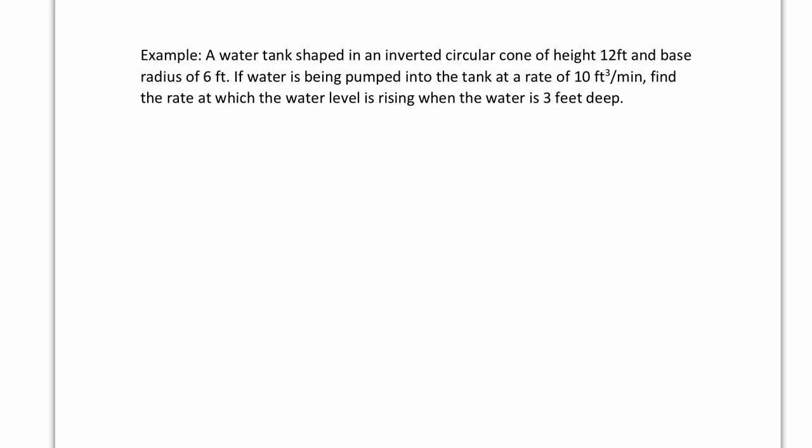Let's do another one. A water tank shaped as an inverted circular cone has height 12 feet and base radius 6 feet. Water is being pumped into the tank at 10 feet³ per minute. Find the rate at which the water level is rising when the water is 3 feet deep. There's a lot going on here. We have an inverted circular cone — inverted means upside down, like an ice cream cone. Water is being pumped in, creating a water level inside.